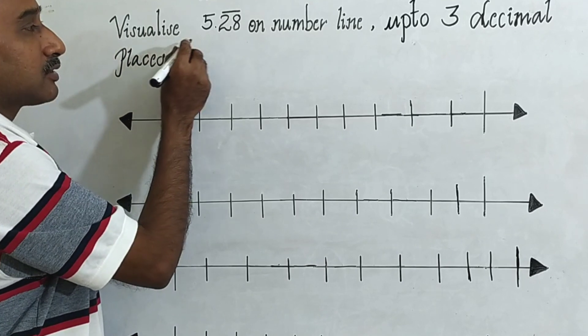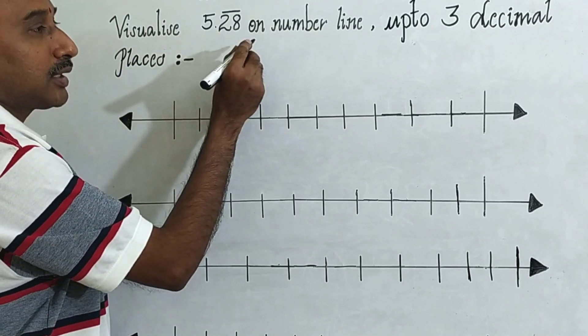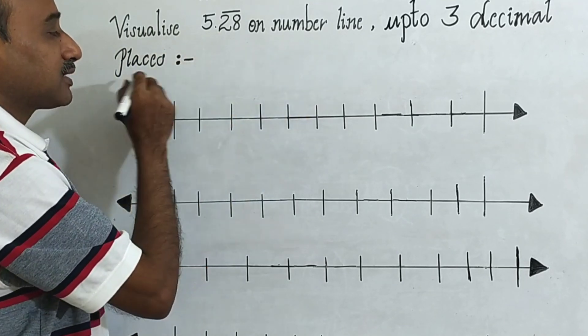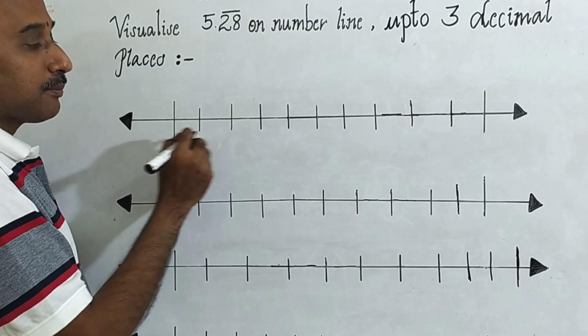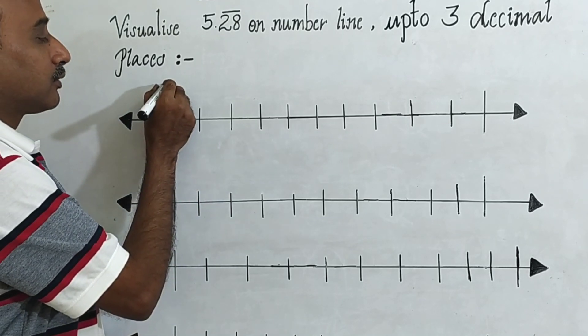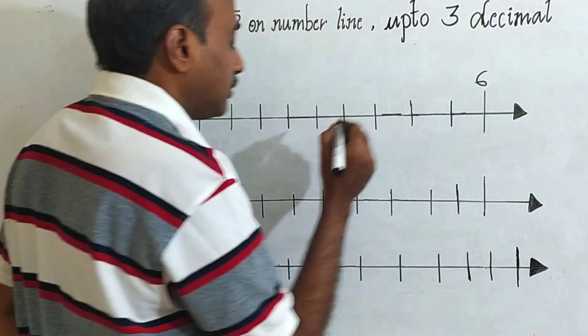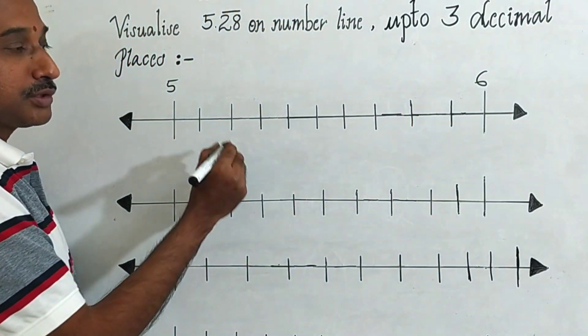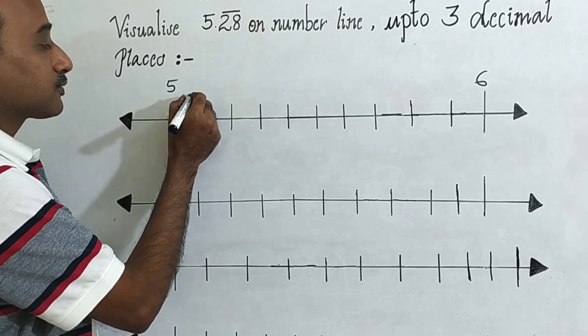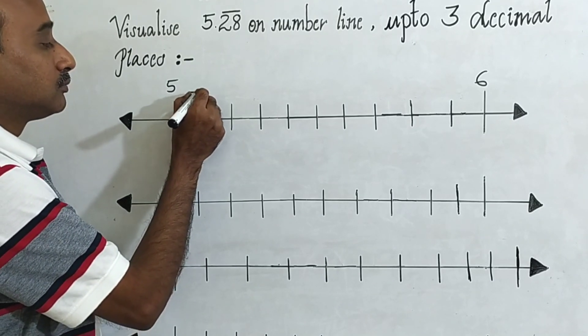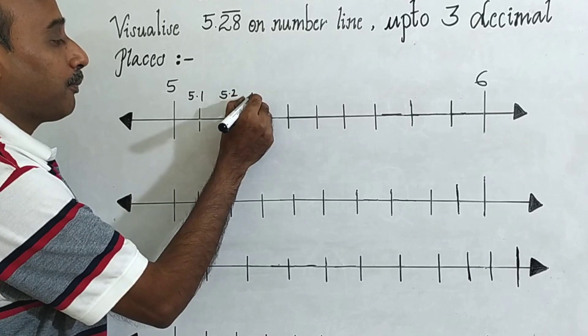Second question: visualize 5.28 bar on the number line up to three decimal places. On the number line, you can take five here, six. You have to divide each unit into 10 parts. This is 5.1, 5.2...